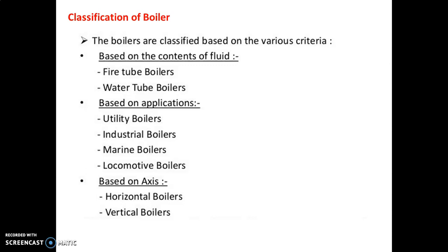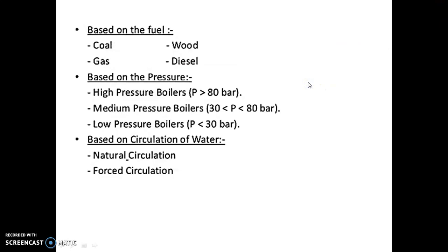On the basis of application, the boiler is classified as utility boilers, industrial boilers, marine boilers, and locomotive boilers. On the basis of the axis of the tube arrangement: horizontal boilers and vertical boilers. On the basis of fuels, the boiler is classified as coal-fired boilers, gas-fired boilers, wood-fired boilers, and diesel-fired boilers. Keep in mind that in a sugar factory in a co-generation power plant, we prefer bagasse as a fuel for the boiler because it is very easily available.